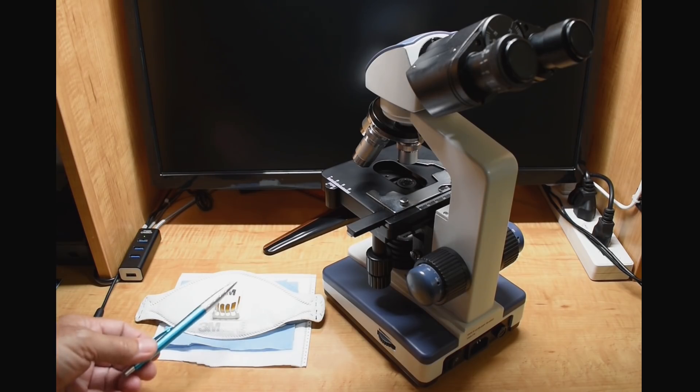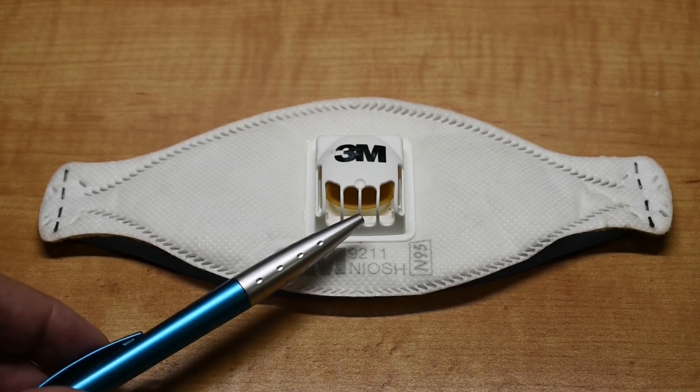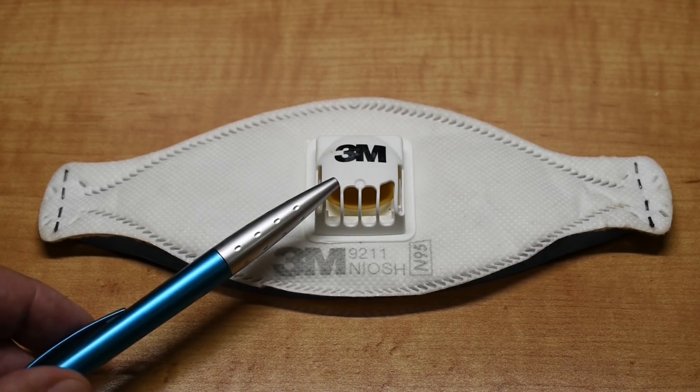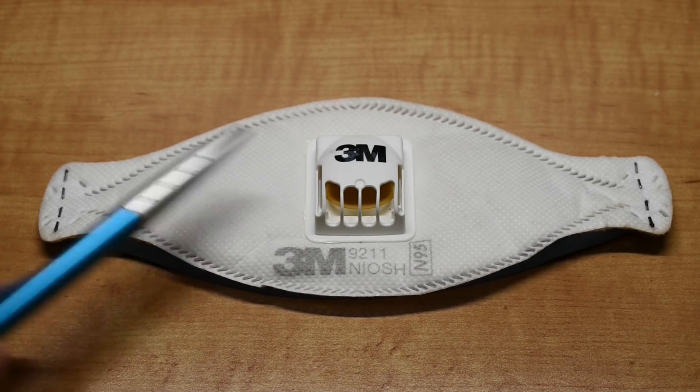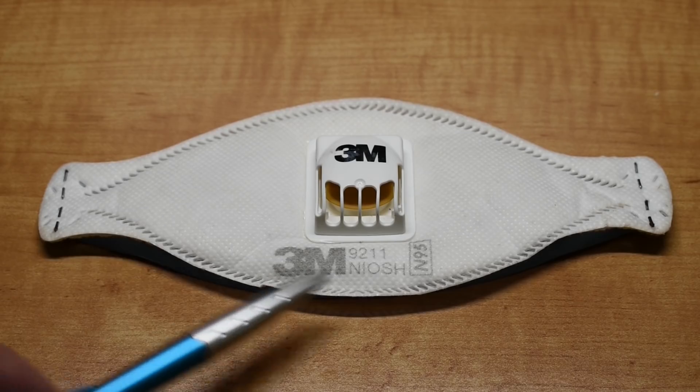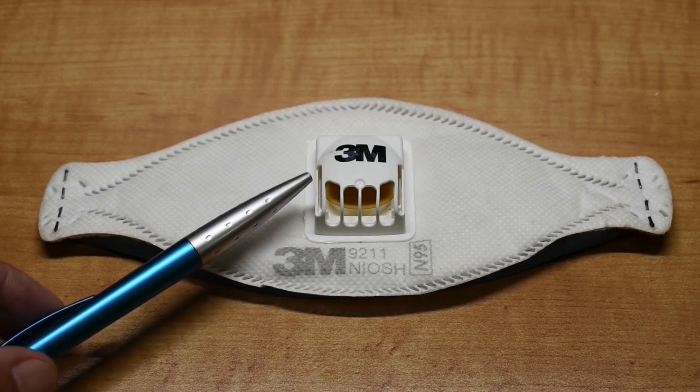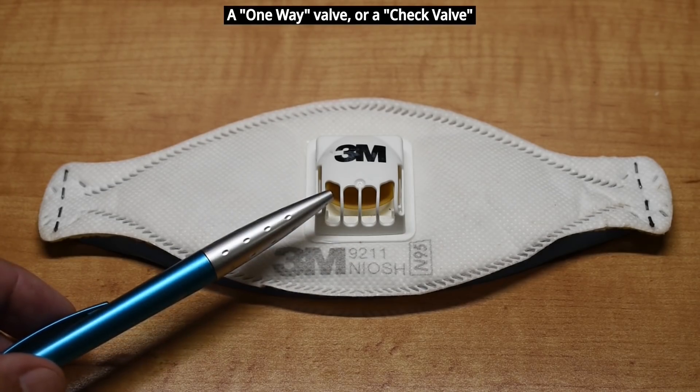Let's zoom in and take a close look at the N95 mask. This mask has an exhaust valve on it. It's nothing more than a rubber flapper that covers an opening, so when you inhale, all the filtration will be done through the fabric. When you exhale, it's going to be blown right out of this area right here.